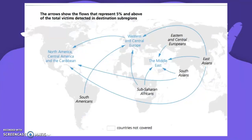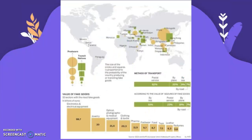Now looking at flows of trafficked people: the main flows are from East Asia to Europe, Europe to North America, South America to Europe, South Asia to North America, and East Asia to North America — or possibly the Caribbean. There are also a lot of South Asians, Eastern Europeans, Central Europeans, and Sub-Saharan Africans going to the Middle East, and some Sub-Saharan Africans going to Western and Central Europe.